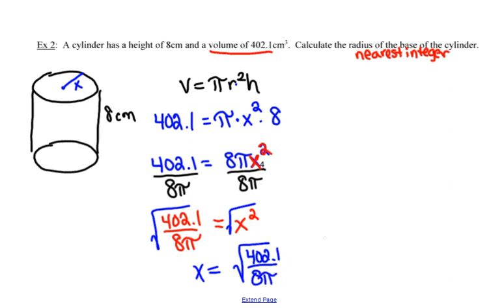That is, remember, an exact value. So if this question just said calculate the radius of the base of the cylinder, my radius of the base of the cylinder, or x, would be equal to the square root of 402.1 over 8 pi.